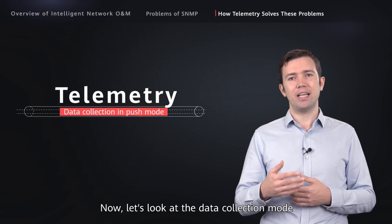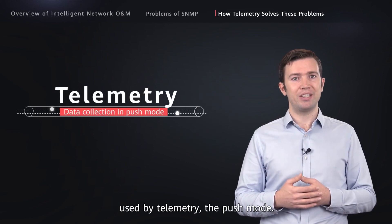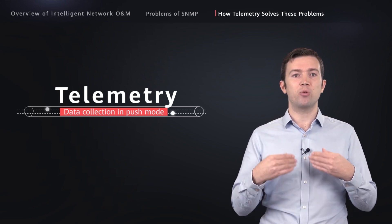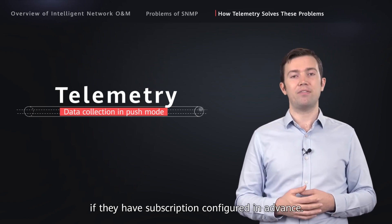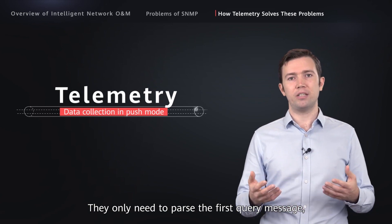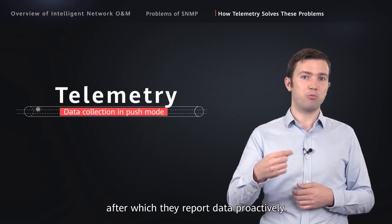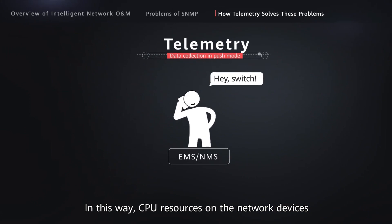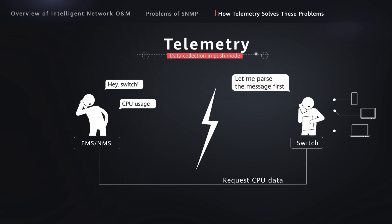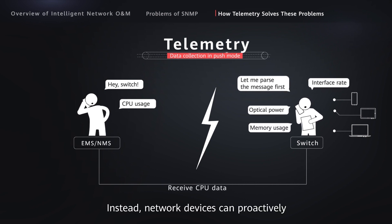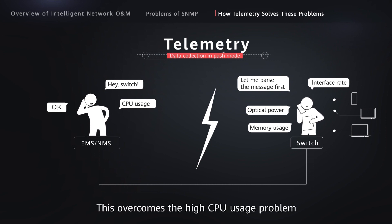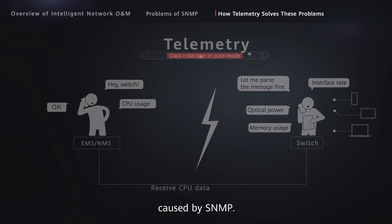Now let's look at the data collection mode used by telemetry: the push mode. With telemetry, network devices can proactively report various types of data to the NMS if they have a subscription configured in advance. They only need to process the first query message, after which they report data proactively. In this way, CPU resources on network devices are no longer passively scheduled as is the case with SNMP — instead, network devices can proactively and effectively schedule their CPU resources. This overcomes the high CPU usage problem caused by SNMP.